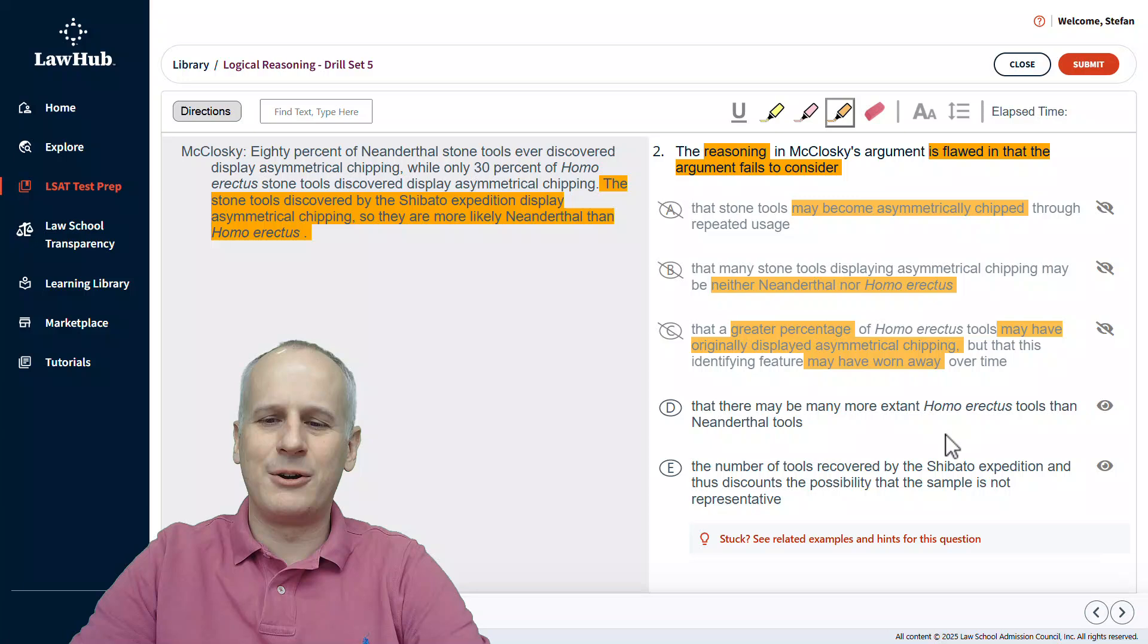Then, choice D. That there may be many more extant Homo erectus tools than Neanderthal tools. Ding, ding, ding. This is exactly what we hopefully predicted before we even began engaging with the answer choices here. D should be selected almost immediately and hopefully will allow us to go more briskly through E.